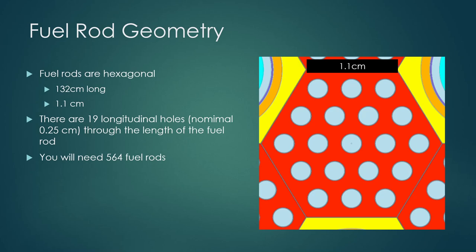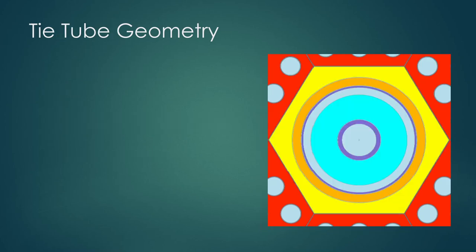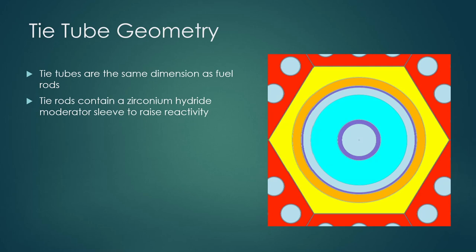You will need 564 of these. Now in between the fuel rods, we have what's called a tie tube. This is also hexagonal, and it's the same size as the fuel rod. The rods inside, in the circular portion, contain a zirconium hydride moderator sleeve, and this raises the reactivity. So by having that moderator sleeve in the middle, we can get away with a smaller core and still have it work as a reactor. You'll need 241 of these.